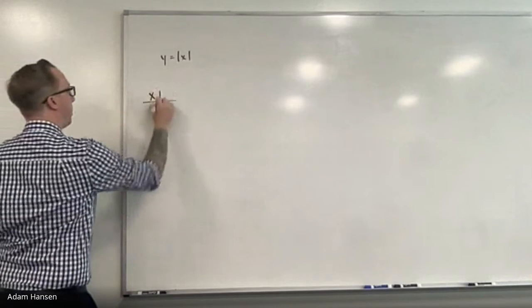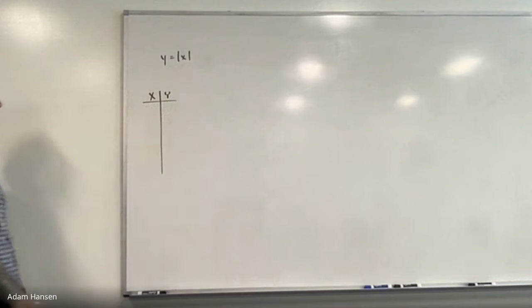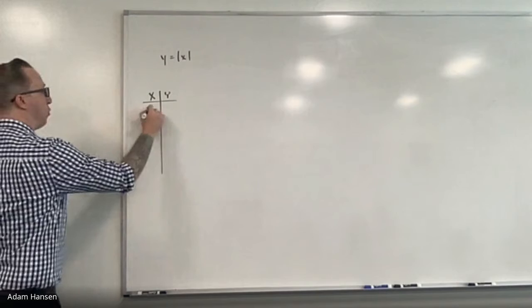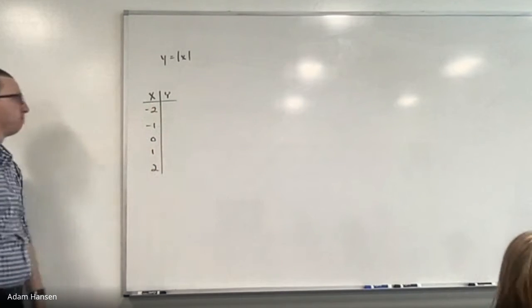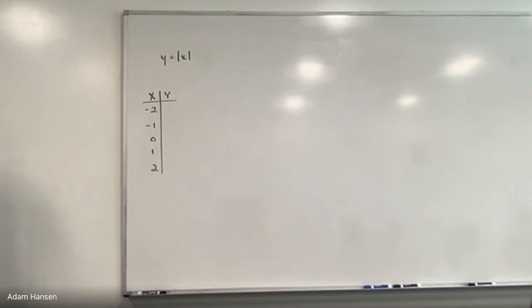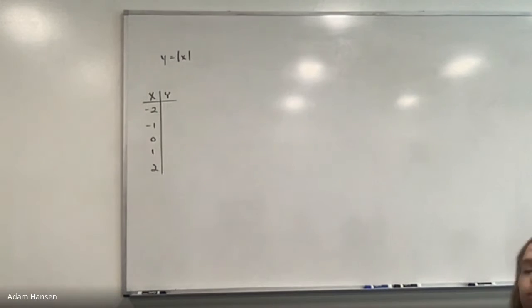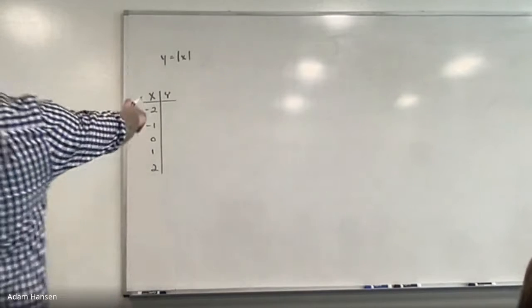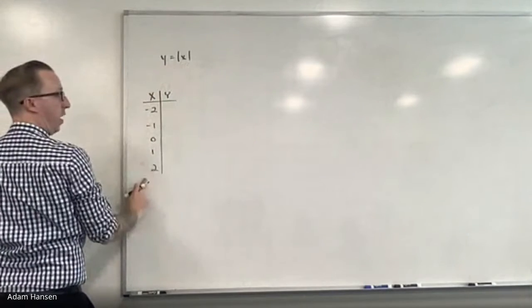Make a t-chart — x, y table. I'll plug in some random x-coordinates. I like to have a few positives and a few negatives, just so there's a variety of different coordinates to plug in. Now that I've plugged in some x values, let's find the corresponding y-coordinates. All the y-coordinates we're going to get out are found by taking the absolute value of these individual x values.